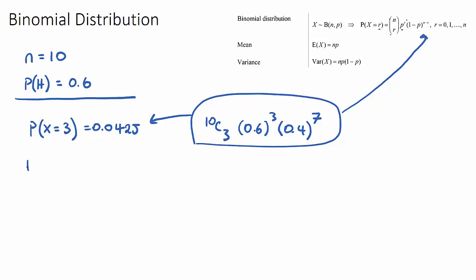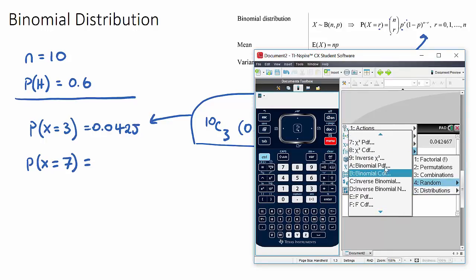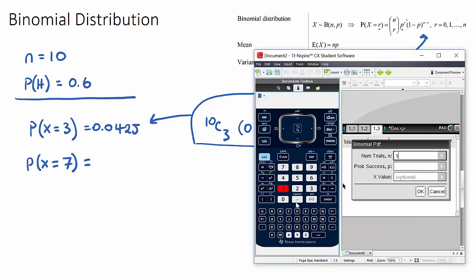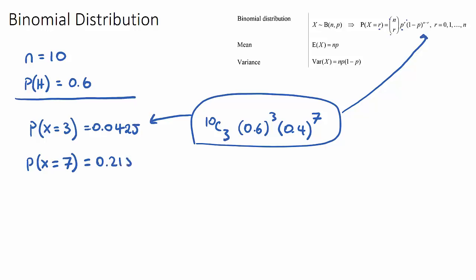So if we said the probability that x is equal to, let's say, seven, we can use our calculator again, and what we're going to get is probably a higher probability, because if we have a probability of getting a head of 0.6 and we have 10 trials, getting three heads would be pretty unlucky, but getting seven would be more likely. So if we were to do the same step, I would assume we'd get a slightly higher probability. Let's go to distributions, binomial pdf, we have 10, 0.6, and we have 7, and we have 0.215 this time.